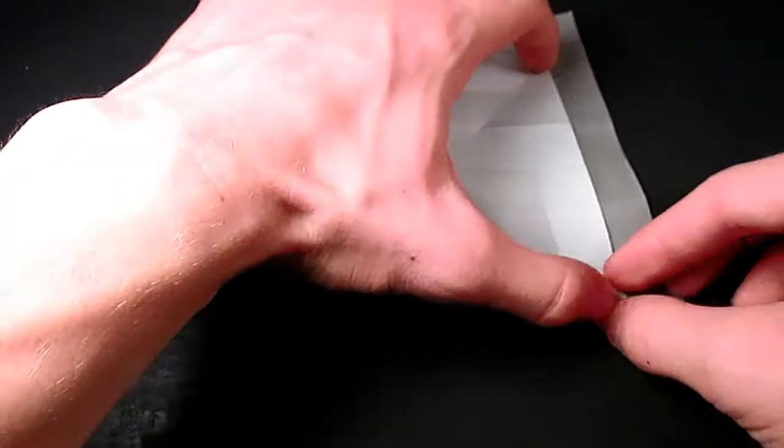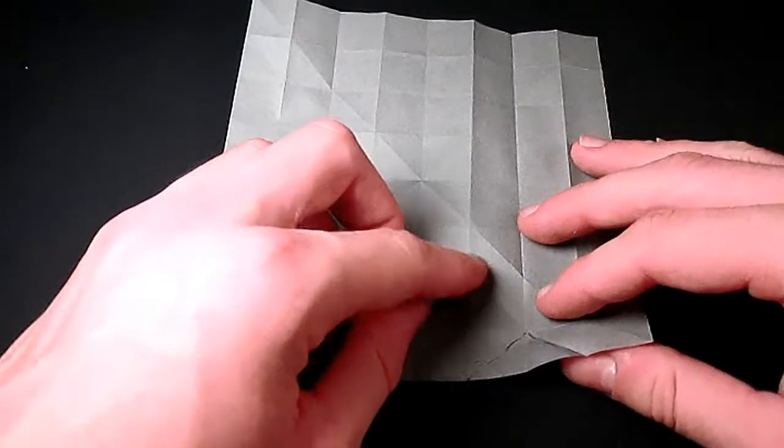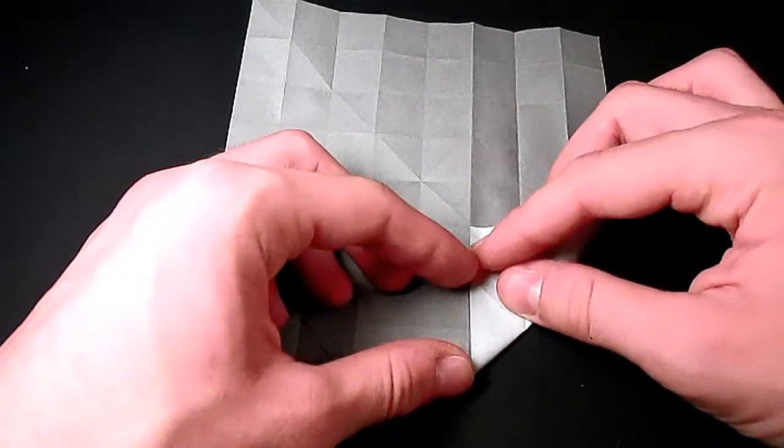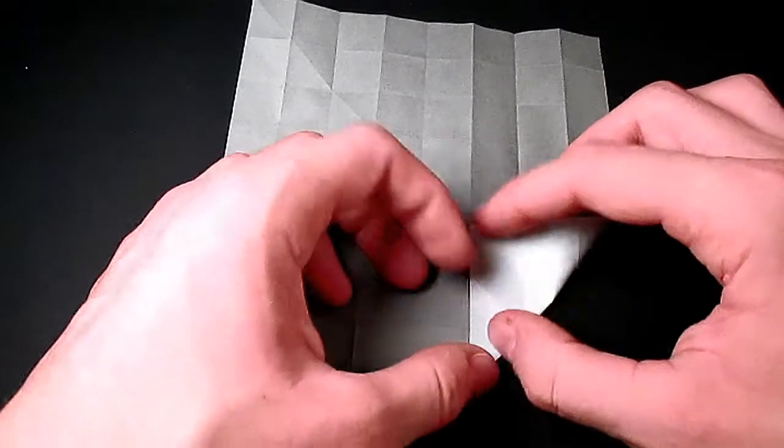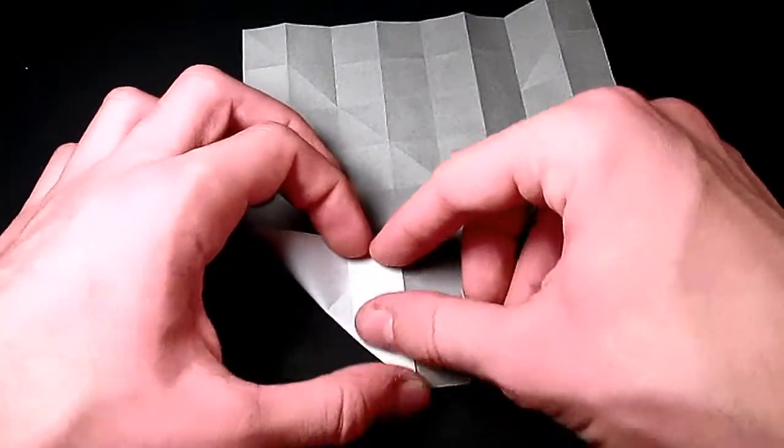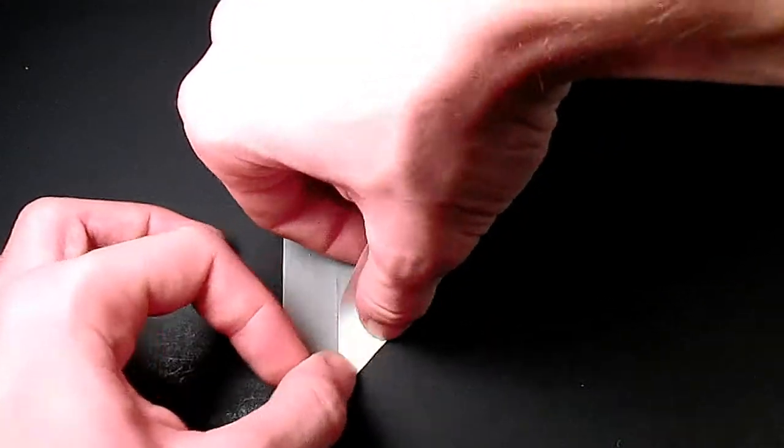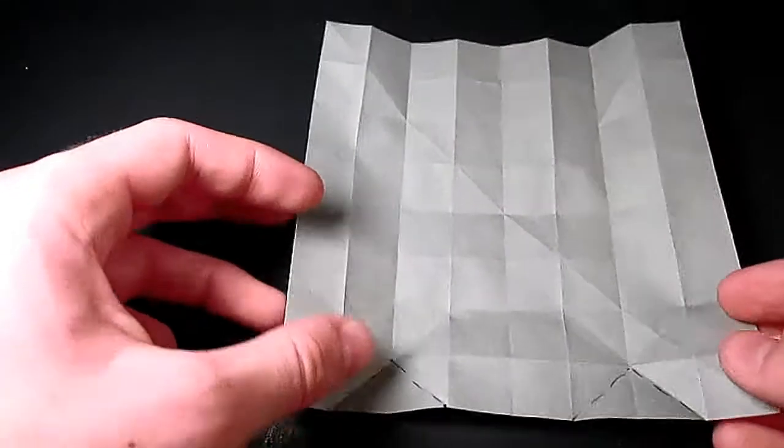So we fold that up to this point here. Then crease only right here. Then we're going to fold this flap over to this line here. And crease once again only where we want the crease to be. Just keeps the model cleaner for later on. And we're just going to fold one last time. And there. That's it for that.